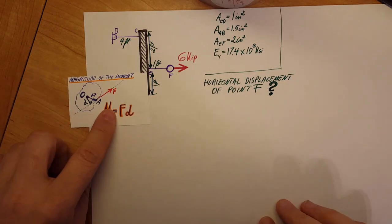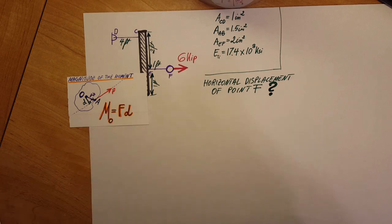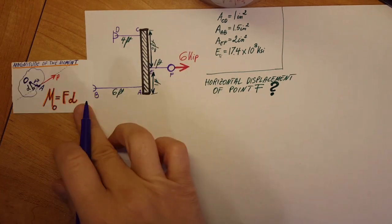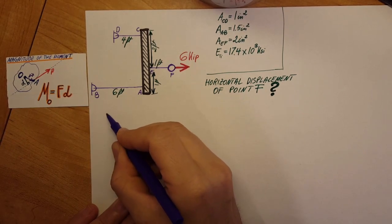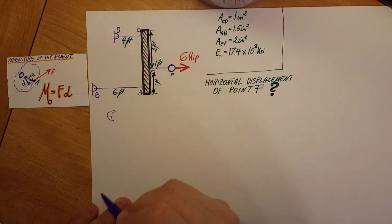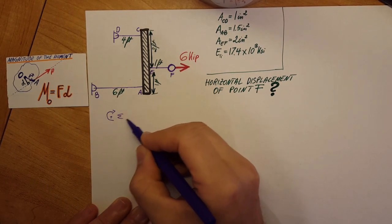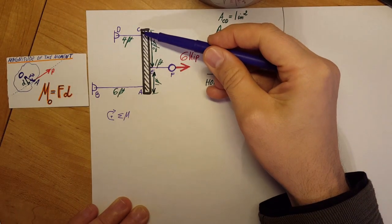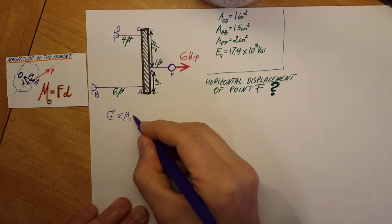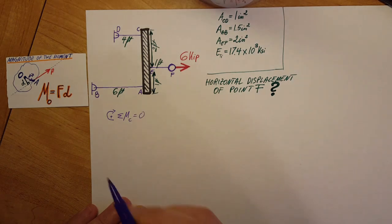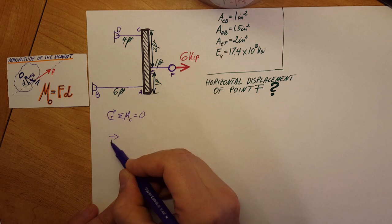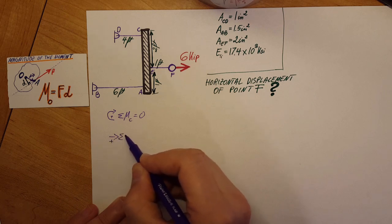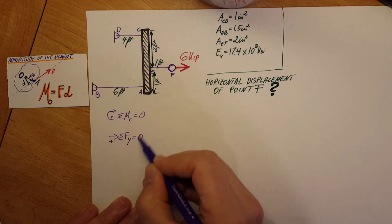First up, we're gonna apply the moment equation, and I'm gonna use positive direction in this way. We're gonna use sum of the moment at point C will be equal to zero, and I'm also gonna use this direction for positive.